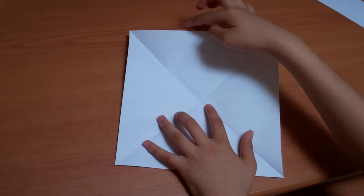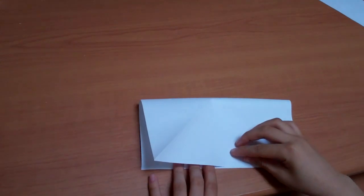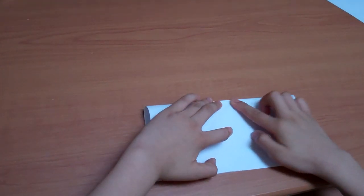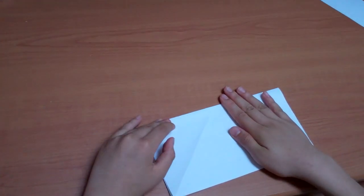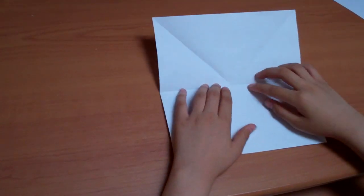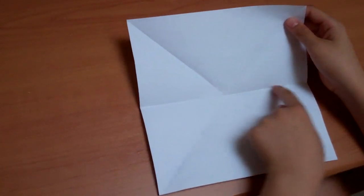So you have to fold this edge to this edge. And crease. You open it back up and you see there's an X with a line running through it.